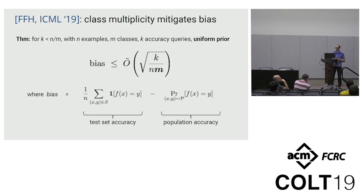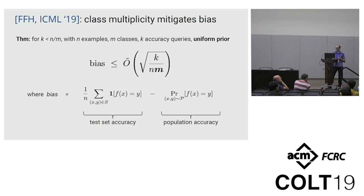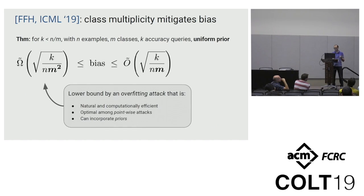At the same time, there have been some recent meta-studies which show that things may not be so bad in reality, so it's natural to try to understand whether there are some factors which mitigate this overfitting. In this work, we have identified the number of classes as one of those factors. Specifically, we show that with a uniform prior over all the classes — the very worst case situation — the largest bias an algorithm can achieve using K accuracy measurements is sqrt(K / (N·M)), where M is the number of classes. So the bias becomes smaller as the number of classes grows. We also give a specific attack on a test set which, under the same conditions, achieves a bias of sqrt(K / (N·M²)), and it's a very natural kind of boosting or bagging technique that can also incorporate prior information if available.